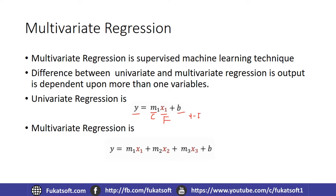But multivariate regression is different — we have more than one input feature. In the multivariate equation, we have x1, x2, and x3 as features, each with corresponding coefficients m1, m2, and m3. The output y depends on all three input variables, and b is again our y-intercept.